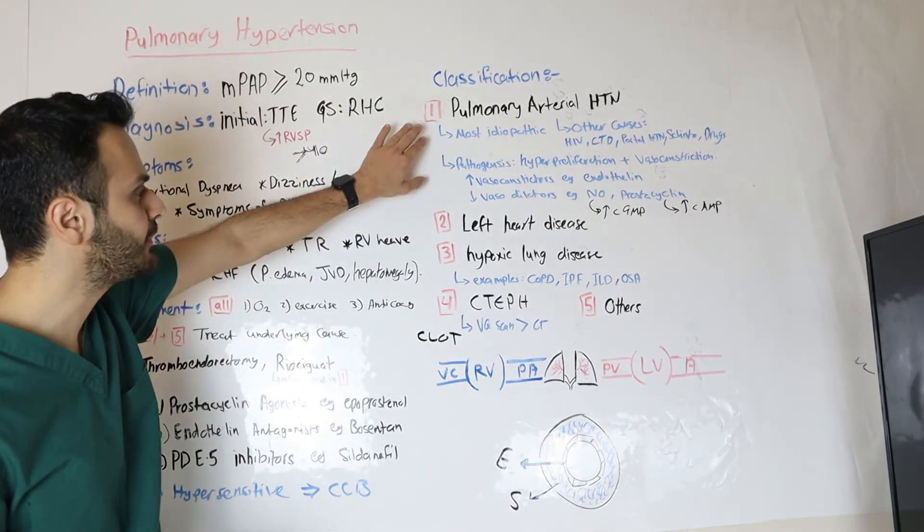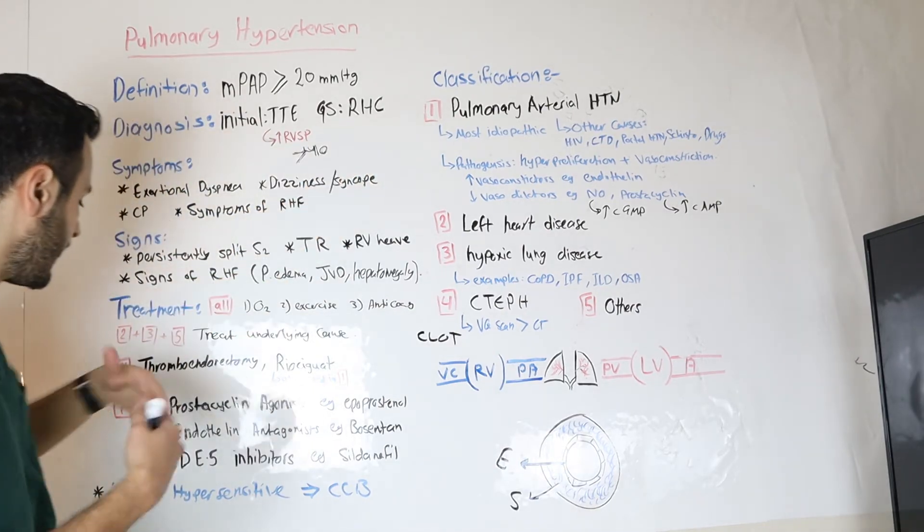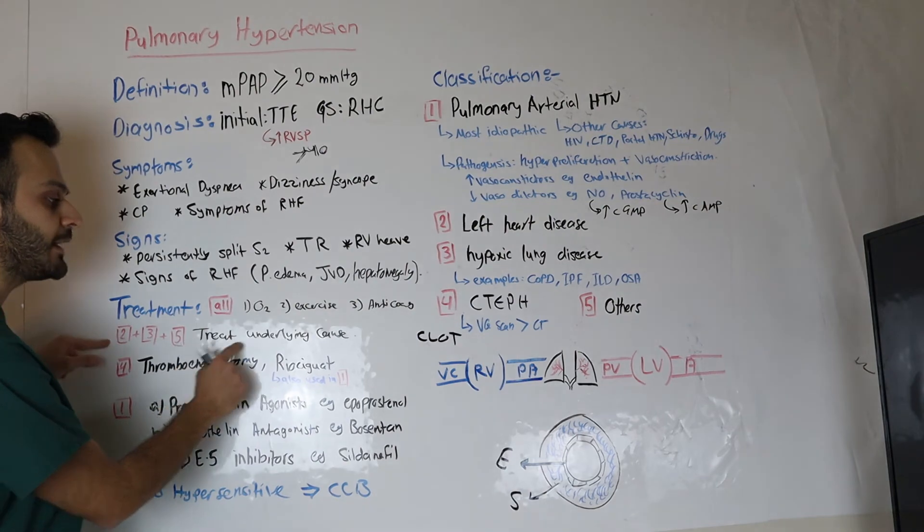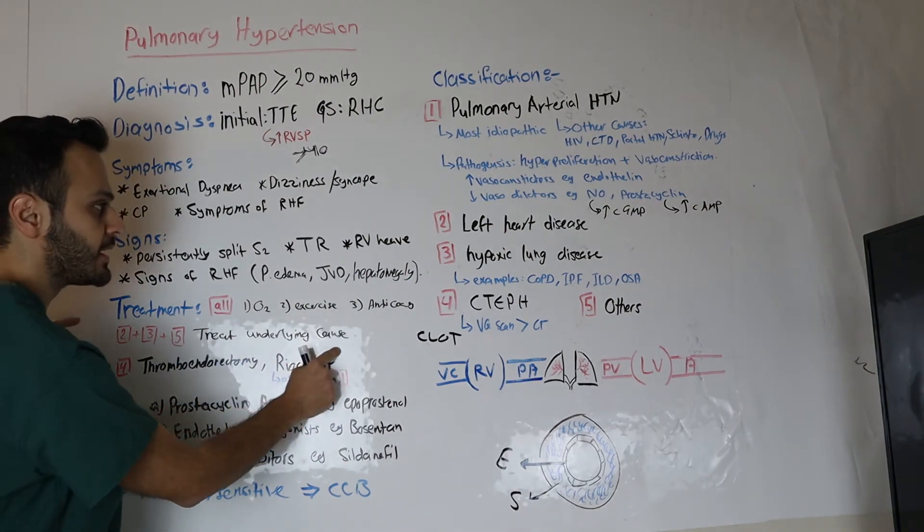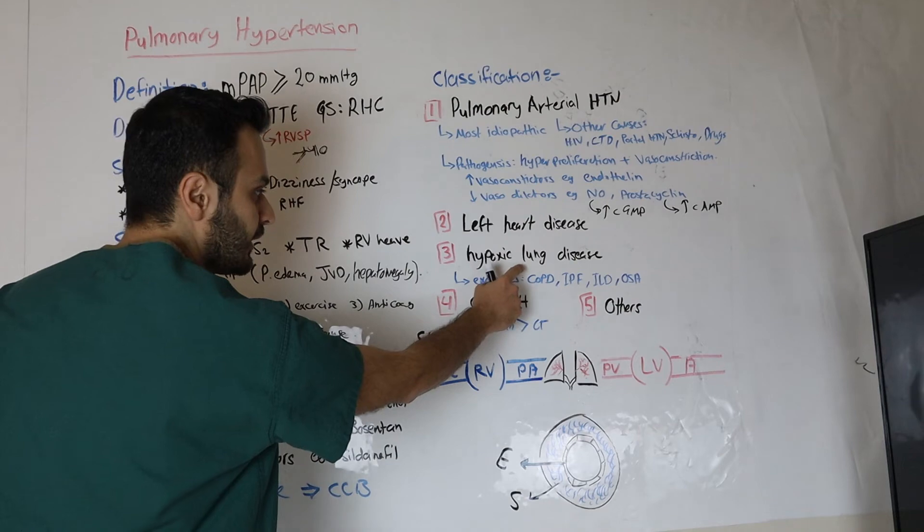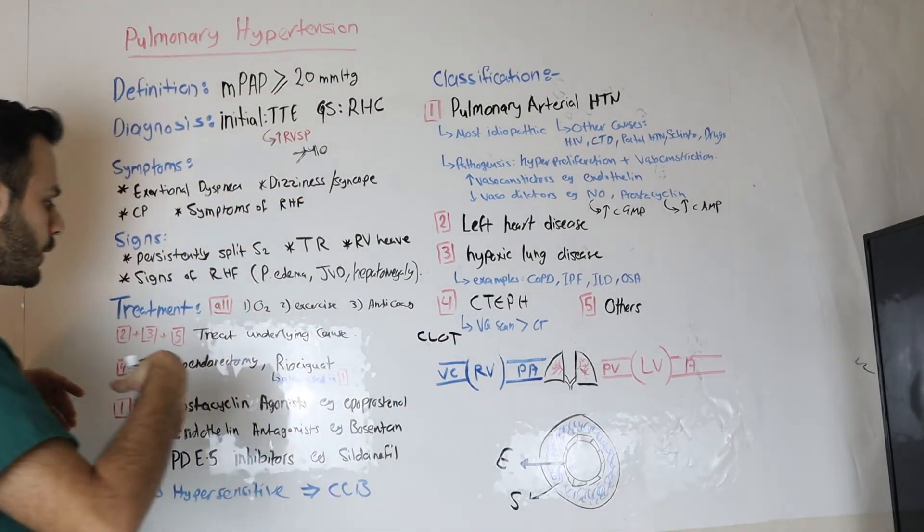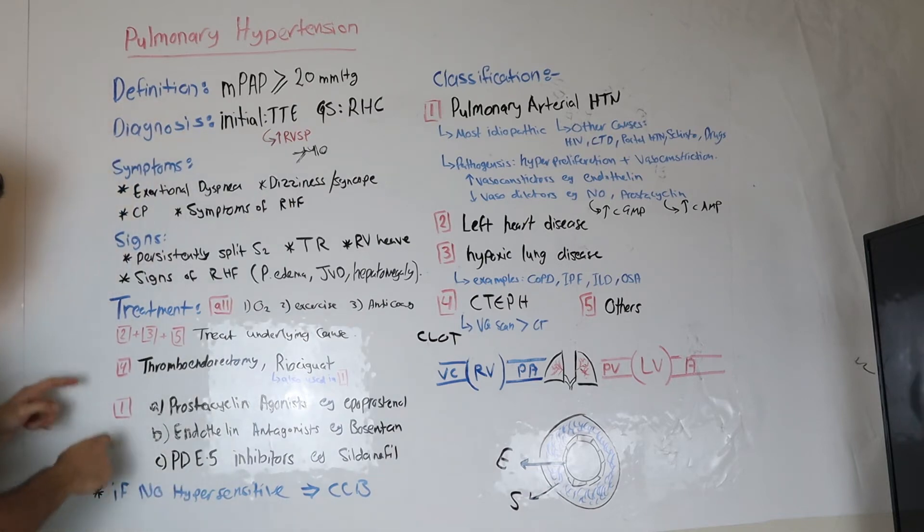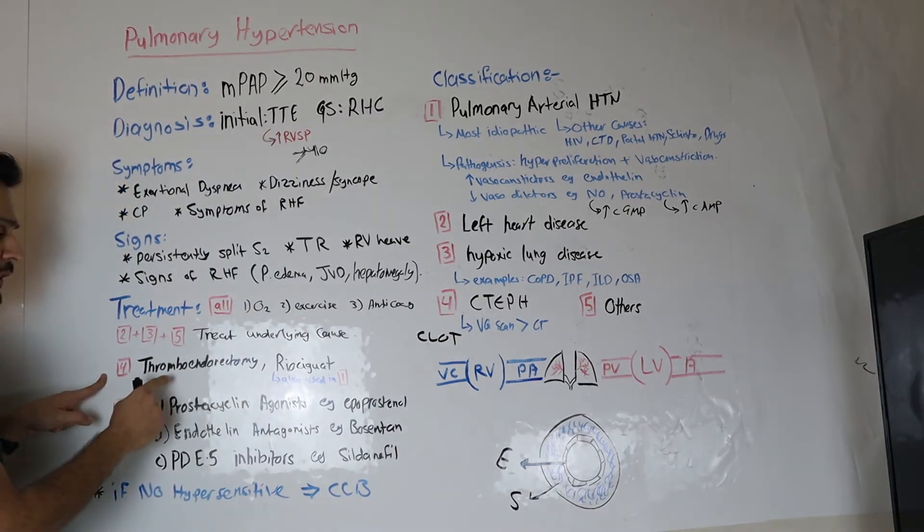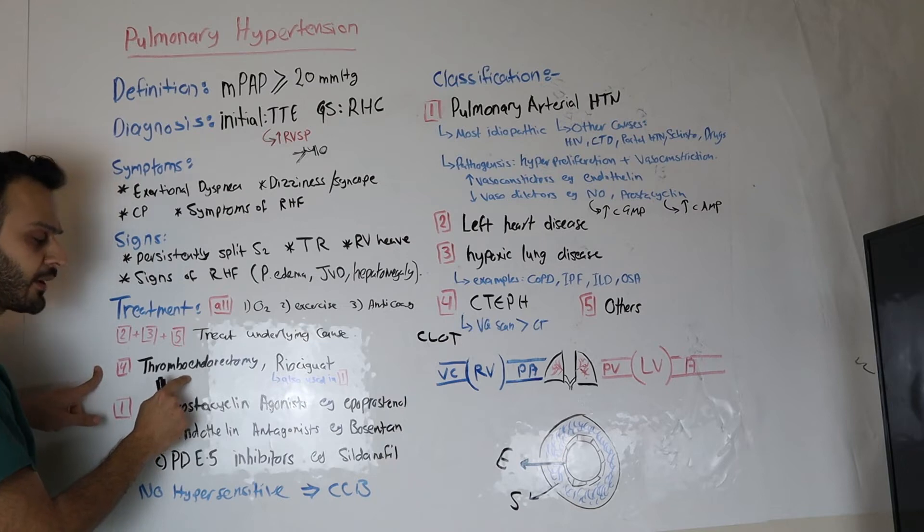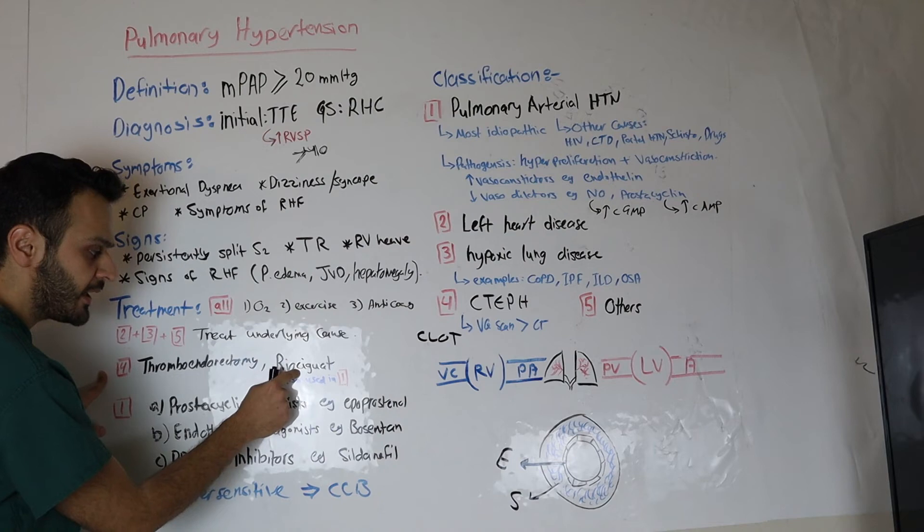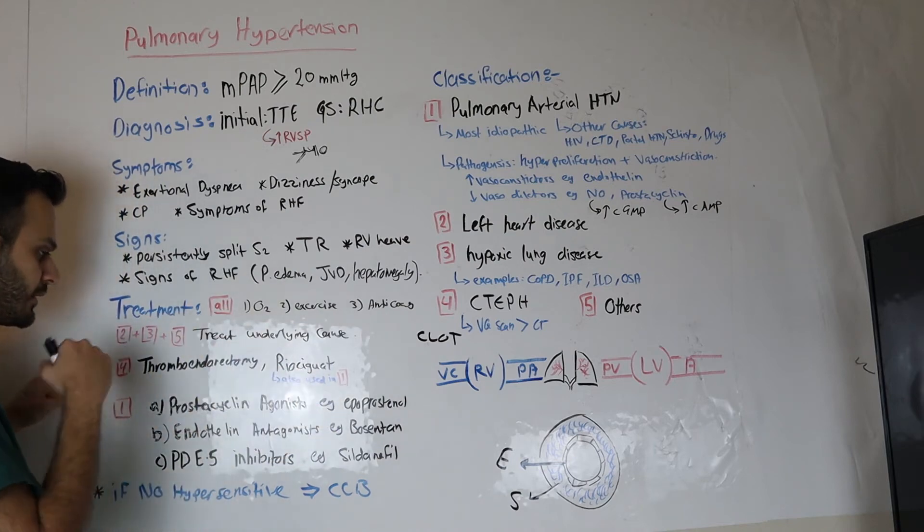Now, we kind of touched base on the treatment for class one, but what about the other classes? In class two, three, and five, you want to treat the underlying cause, and by treating the underlying cause, by treating the heart disease, by treating the lung condition, then that will lead to an improvement in the pulmonary hypertension. In class four, if there is a clot there, you want to take care of it, you want to remove it by thromboendarterectomy. Then you can also give a medication called riociguat, that is second line agent, that is the only medication that's FDA approved for class four.